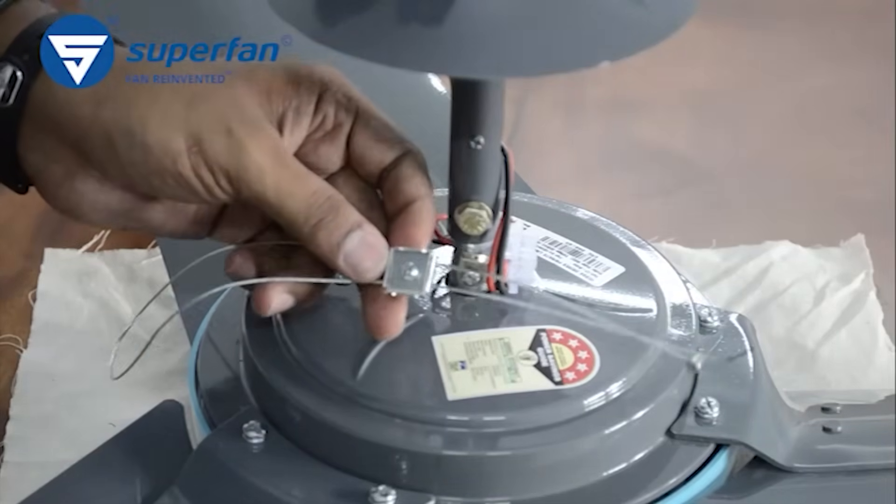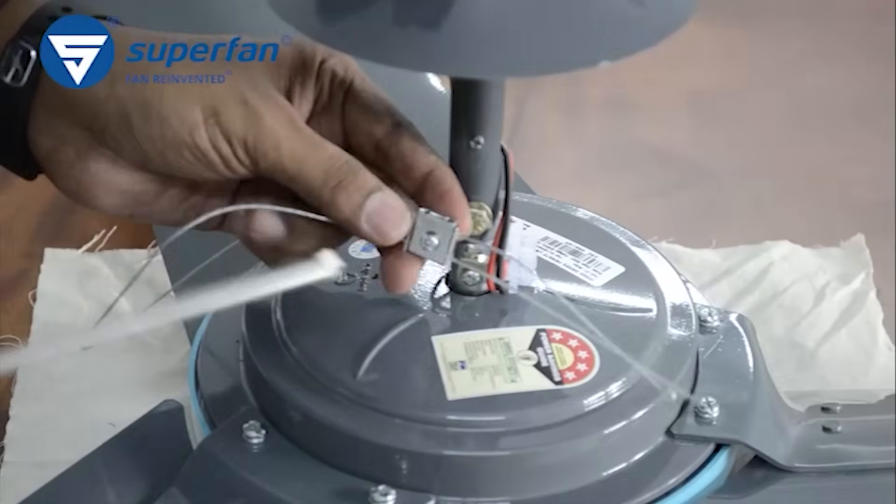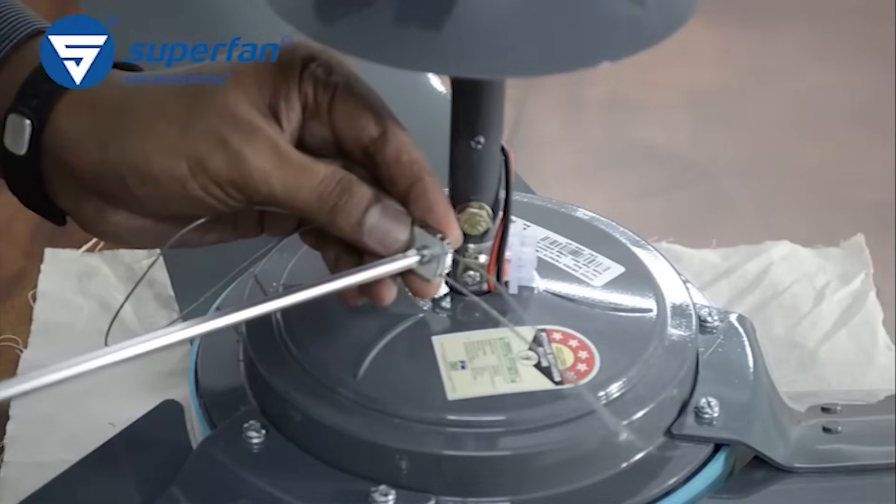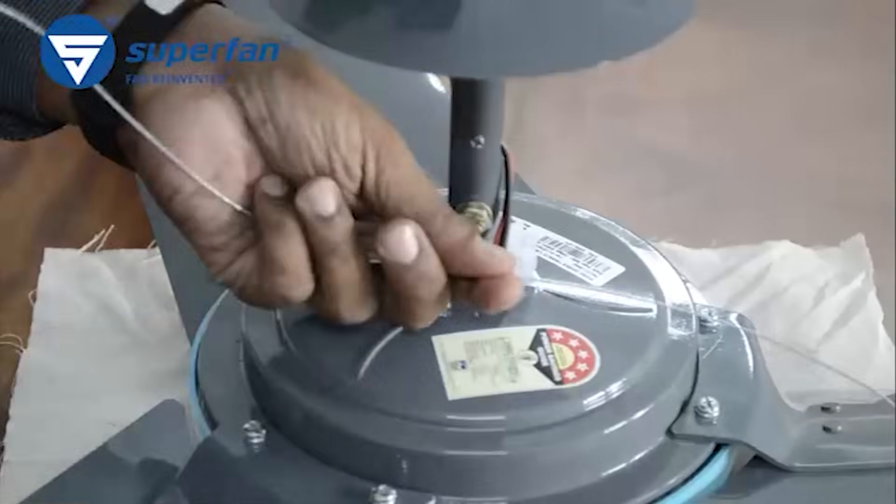This is the safety rope. It secures the fan further. Unscrew the metal clamp in the safety rope. The clamp splits into two pieces.